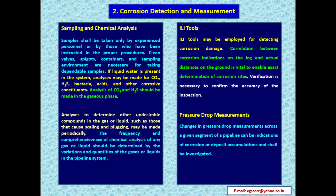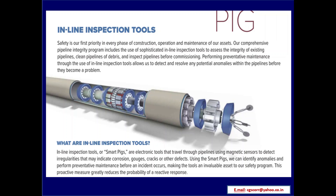ILI (in-line inspection) tools may be employed for detecting corrosion damage. Correlation between corrosion indications on the log and actual distances on the ground is vital to enable exact determination of corrosion sites, and verification is necessary to confirm accuracy. Changes in pressure drop measurements across a given pipeline segment can be indications of corrosion or deposit accumulations and shall be investigated.